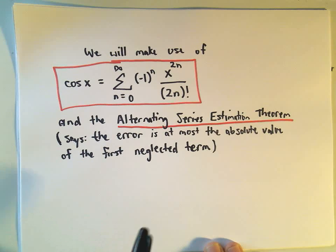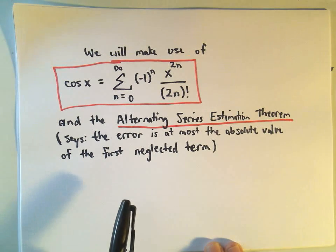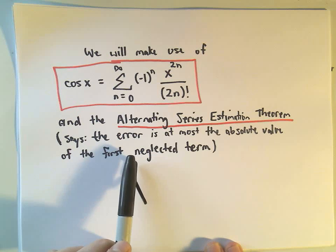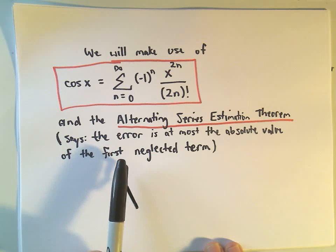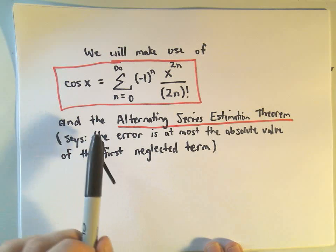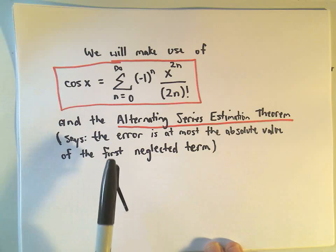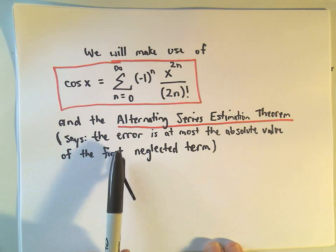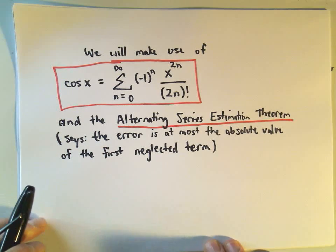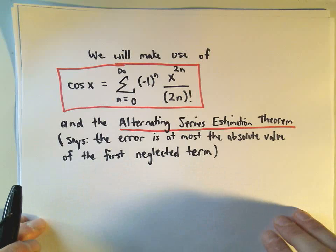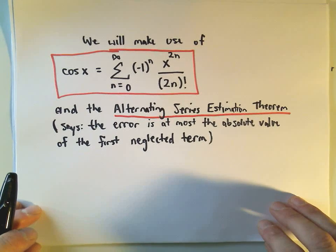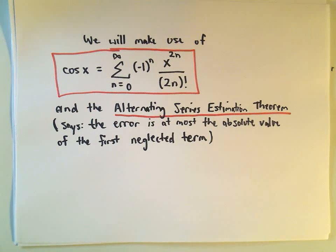Just to remind you, the alternating series estimation theorem says that the error, when you approximate your function with an alternating series, is at most the absolute value of the first neglected term. So we're going to make use of these two nice facts.